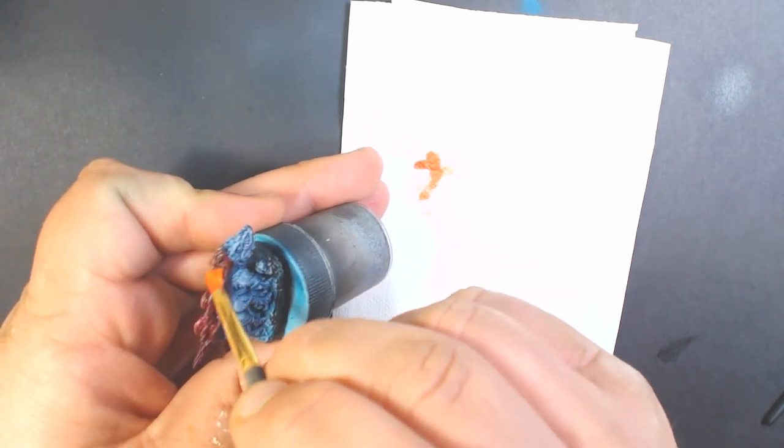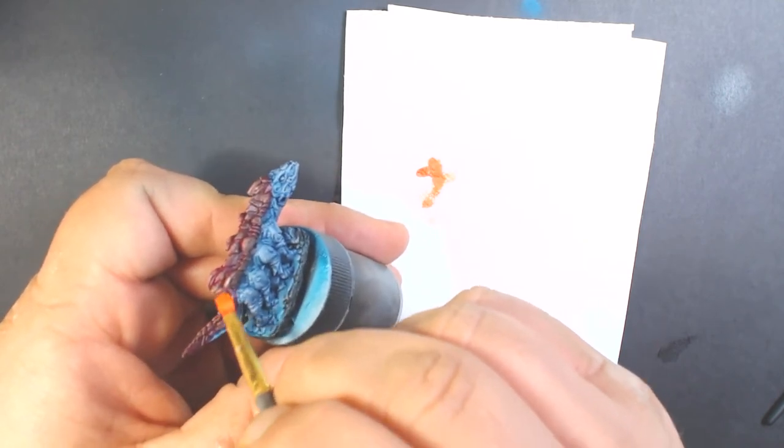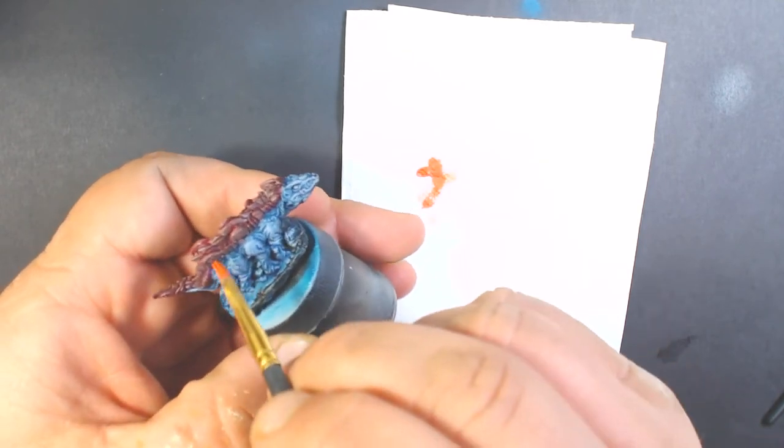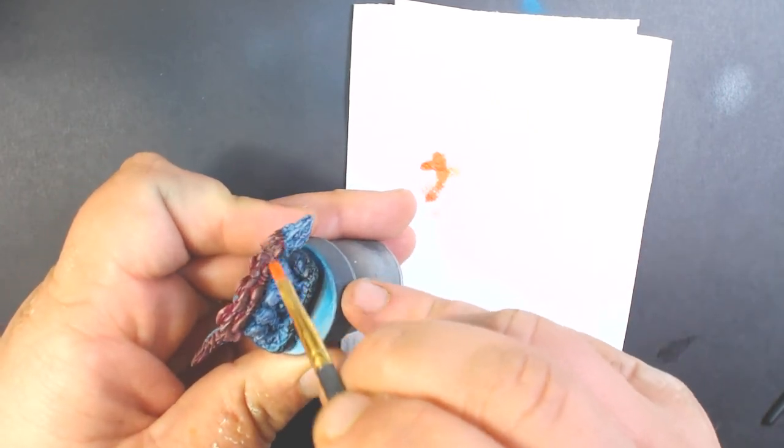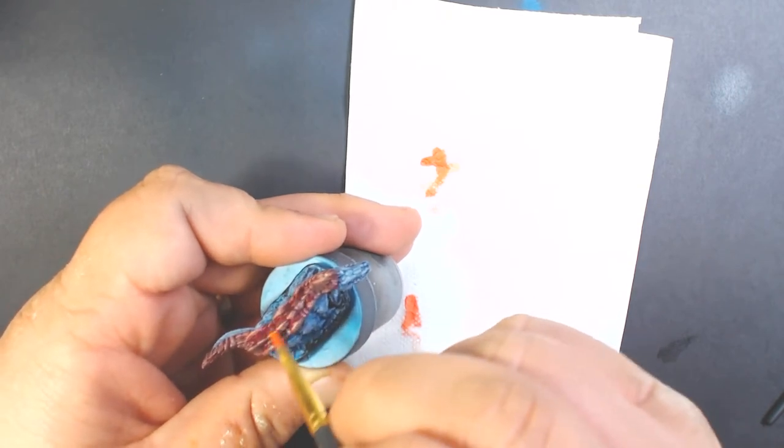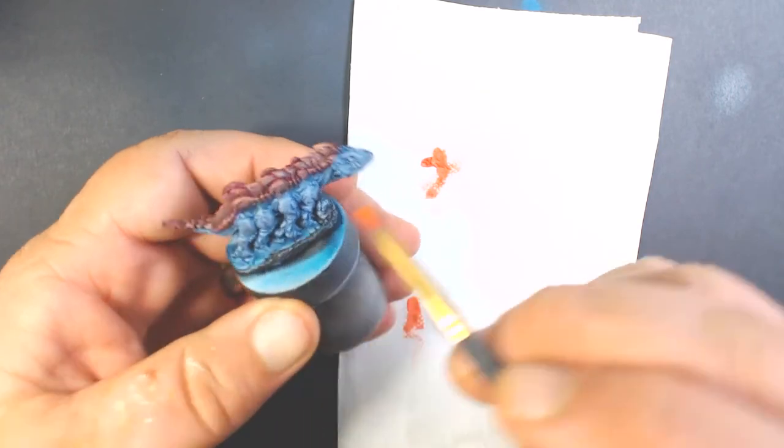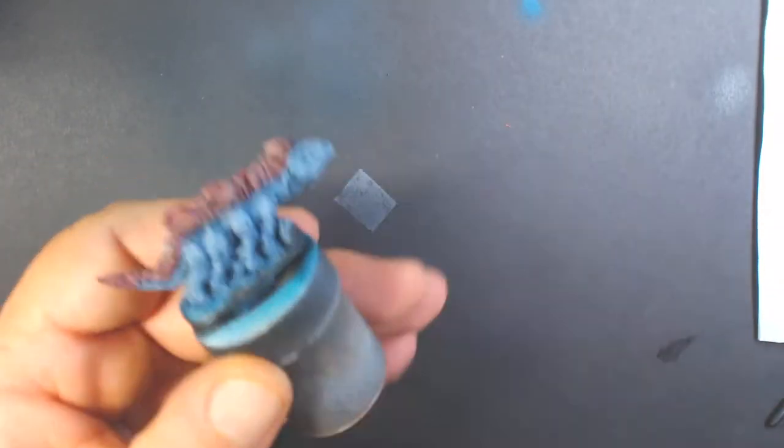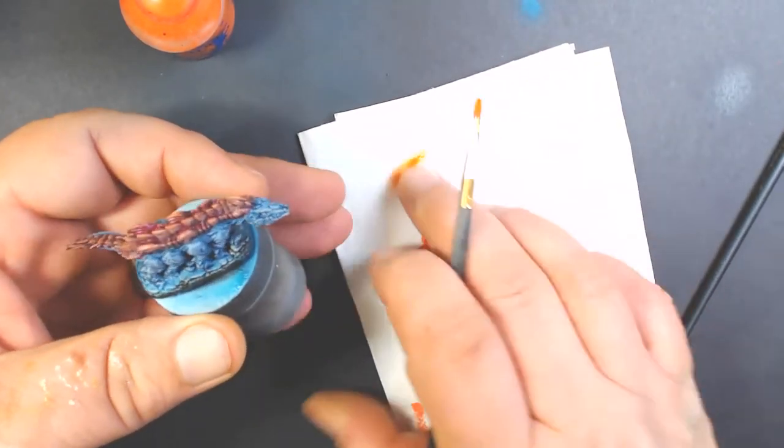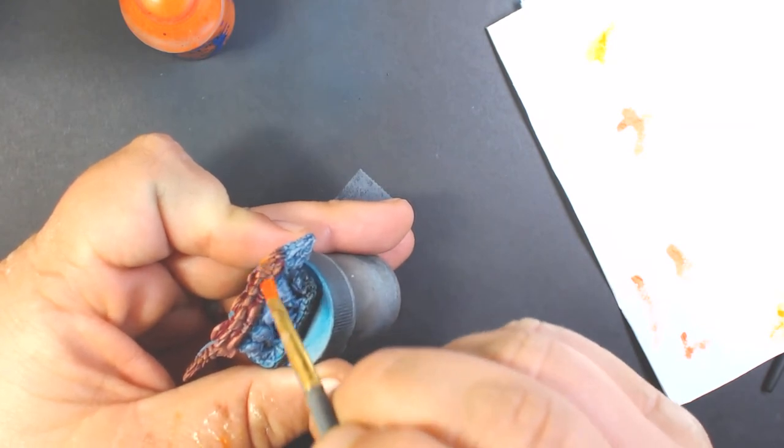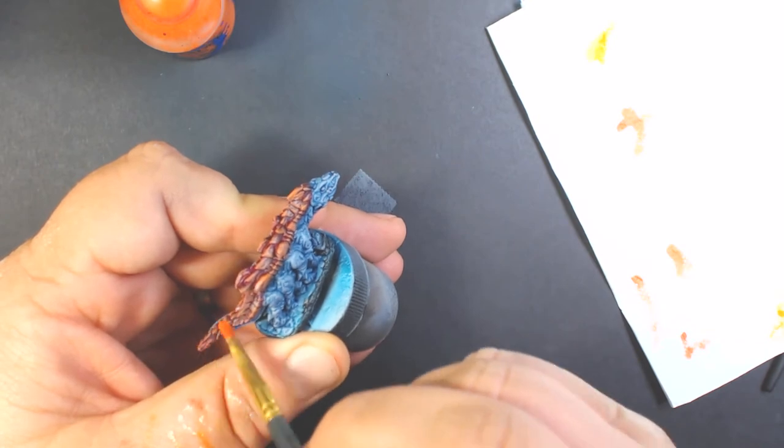Now we're going to highlight our red scales with Scale 75 Orcish Dermis. This is a pretty wet dry brush - you can see I'm not wiping a lot of the paint off, but just enough so it doesn't fill in the details. Then to that mix I'm going to add some Trollslayer Orange from Citadel. This time I am going to dry it pretty thoroughly. I just want to brighten up all the tips and the highest ridges.